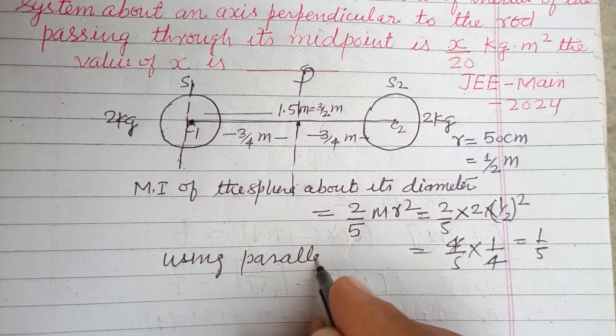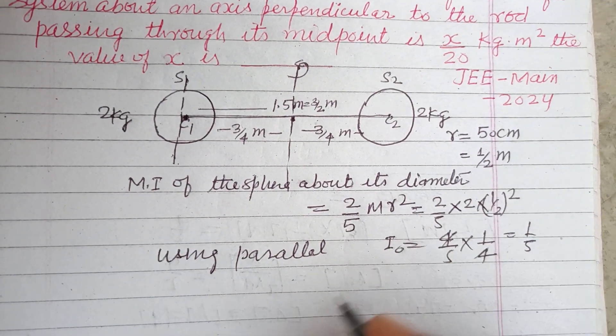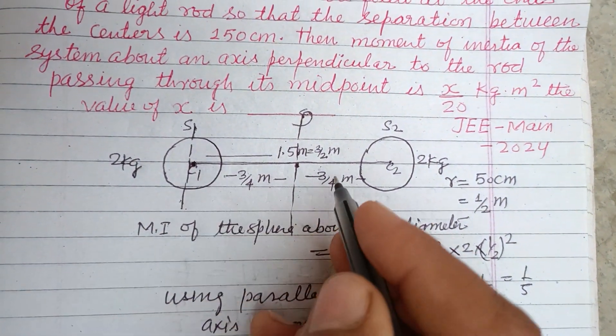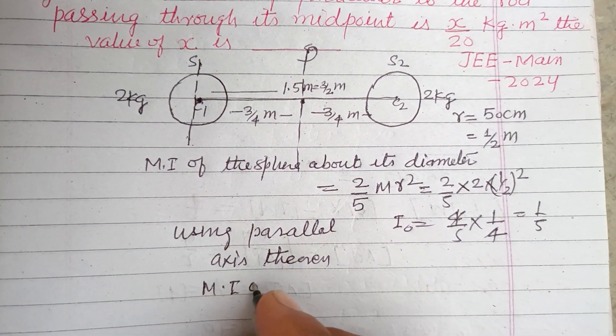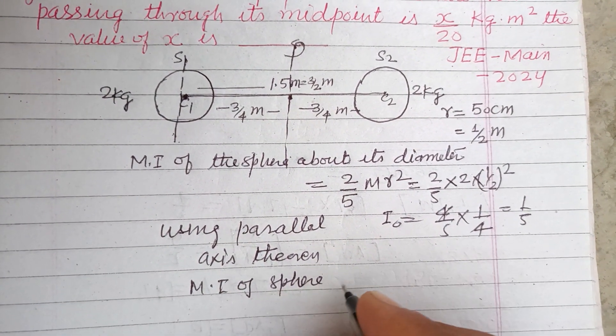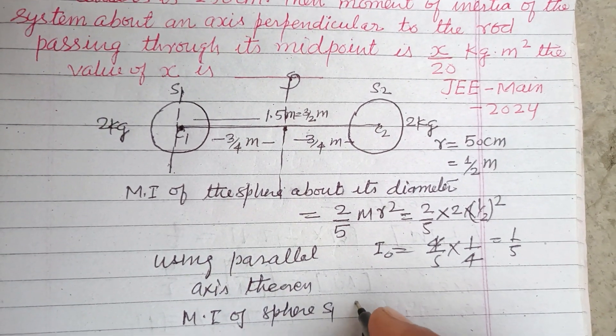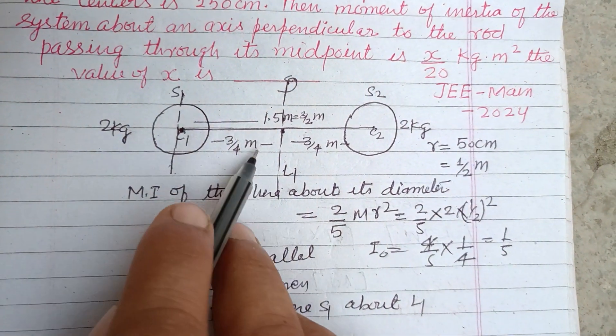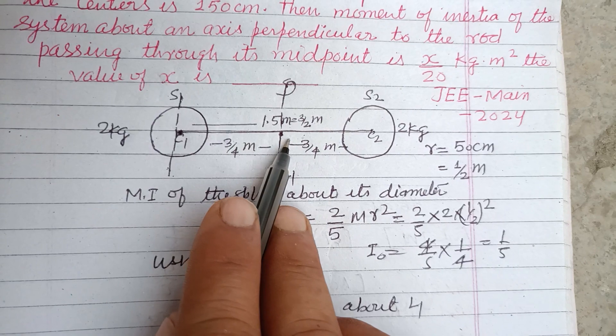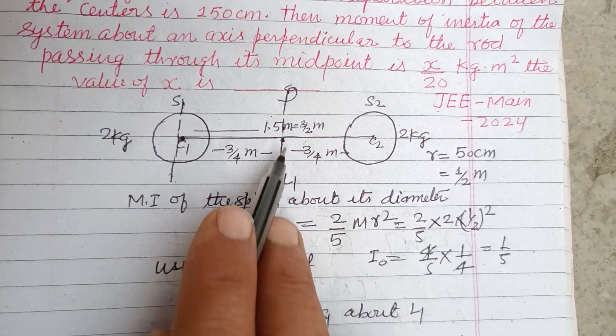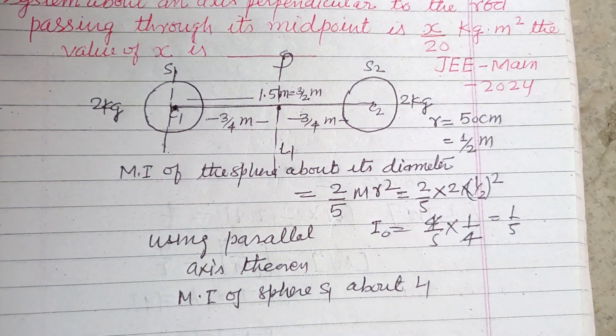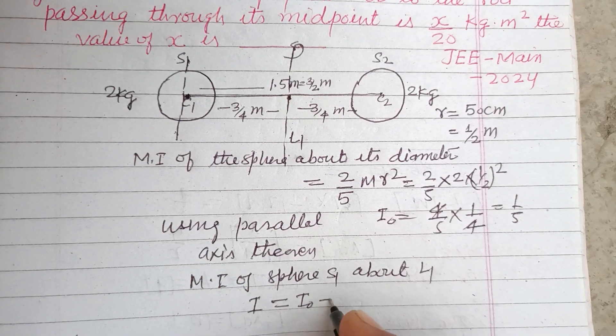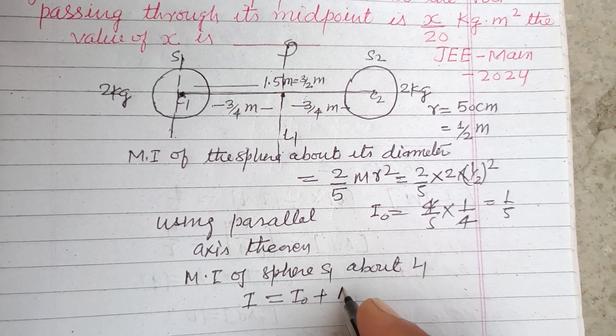Using parallel axis theorem for the sphere - moment of inertia about MI of the sphere S1 about line L1, which is passing through perpendicular to midpoint of the two sphere rod and perpendicular to the rod - so L1: I equals I₀ using parallel axis term plus MR² or MD².